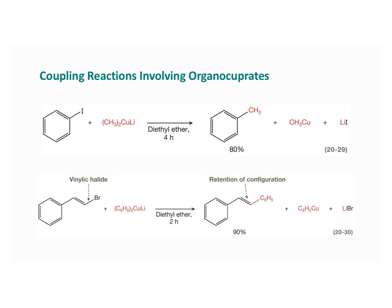Let's look at some examples. The first one is an aryl halide reacting with the cuprate-lithium group. In equation 2030 we see the vinylic halide — there's that double bond. Notice that this retains its configuration: because it retains its trans configuration, we classify this as stereospecific. It will retain that configuration.